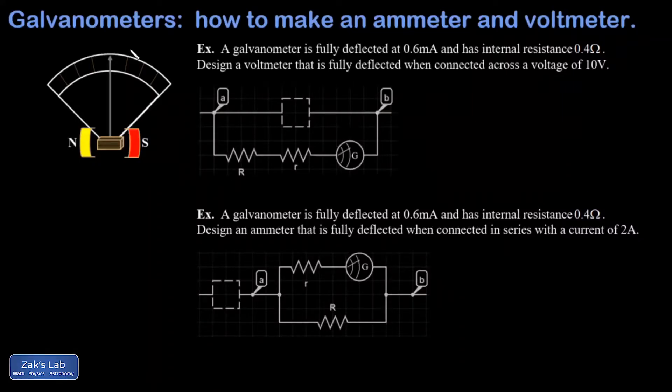In this video, we introduce a simple device called the galvanometer and explore how it can be used to construct an ammeter or a voltmeter.